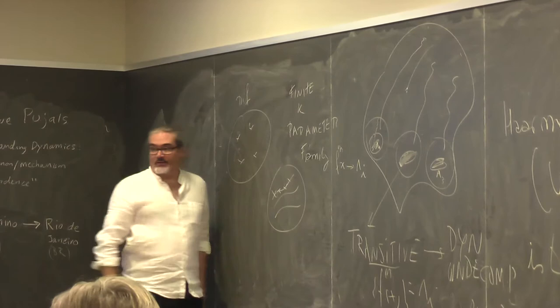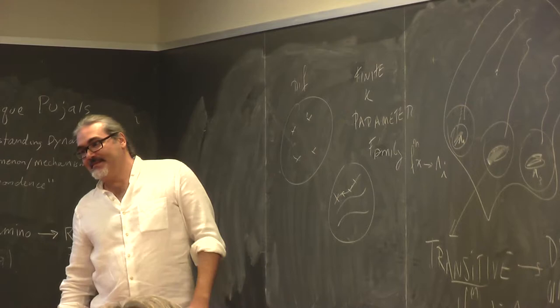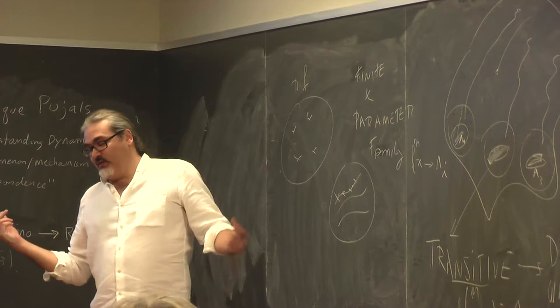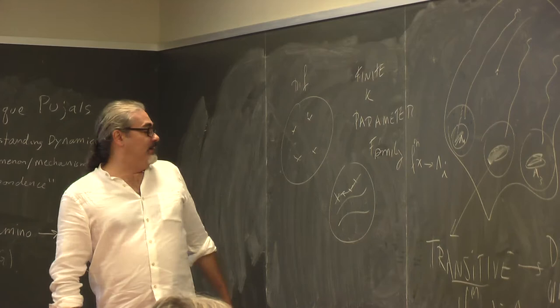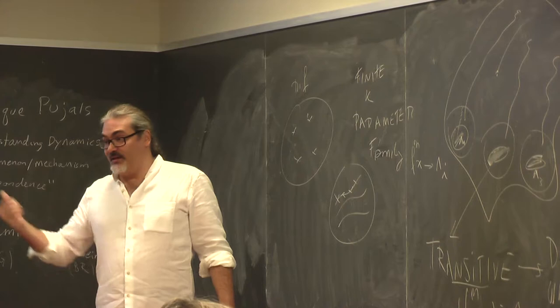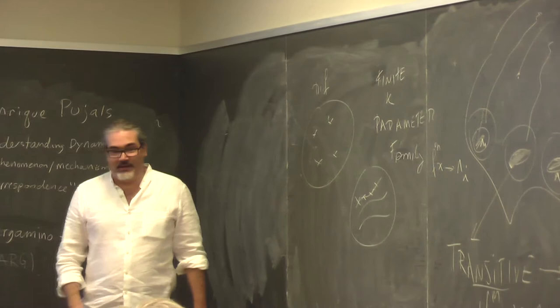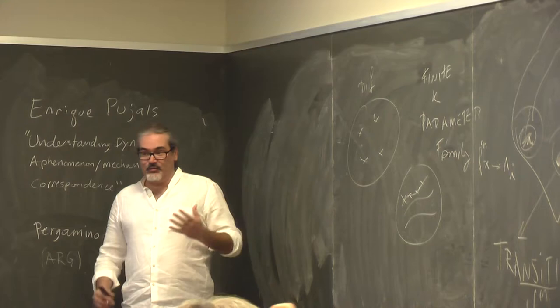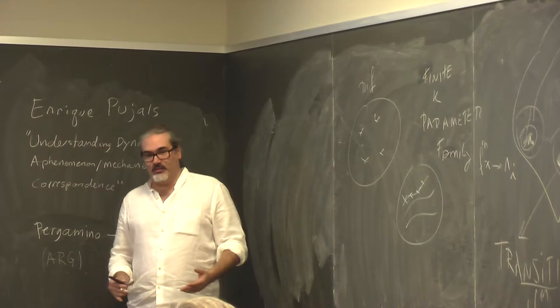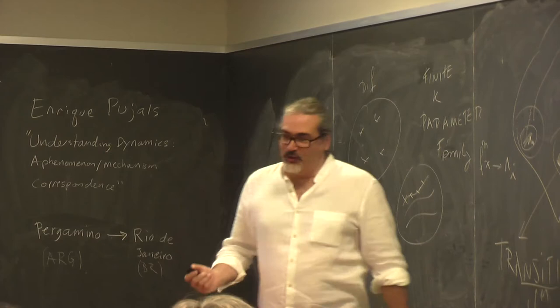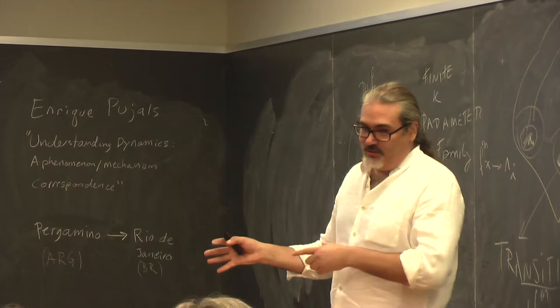If you have infinitely many attractors and almost every point converges to one of them, for a parametric family this will have zero measure if the conjecture is true. But it's not clear that for a generic family it's going to have zero measure. Genericity does not see what happens from the measure-theoretical point of view. Sometimes when you put together topological concepts and measure-theoretical concepts, you start to see different aspects that do not combine well.